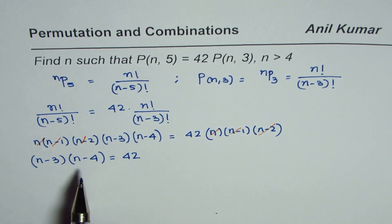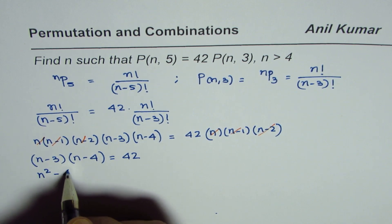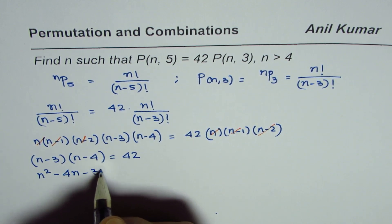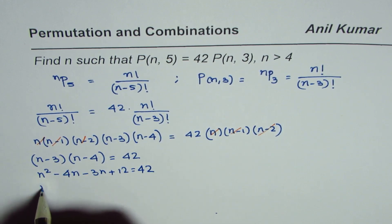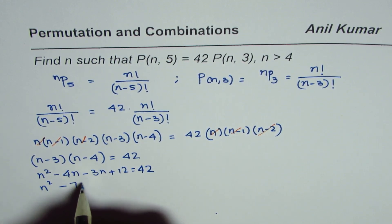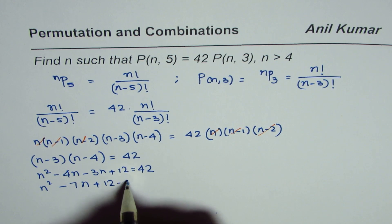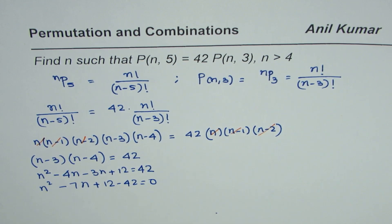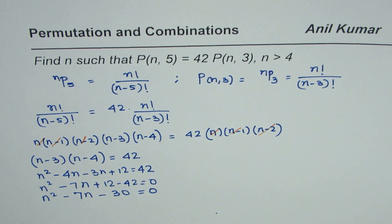So let us expand. So it is a quadratic equation. n² - 4n - 3n + 12 equals 42 or n² - 7n. And bringing 42 to this side gives us plus 12 minus 42 equals 0 or n² - 7n - 30 equals 0.